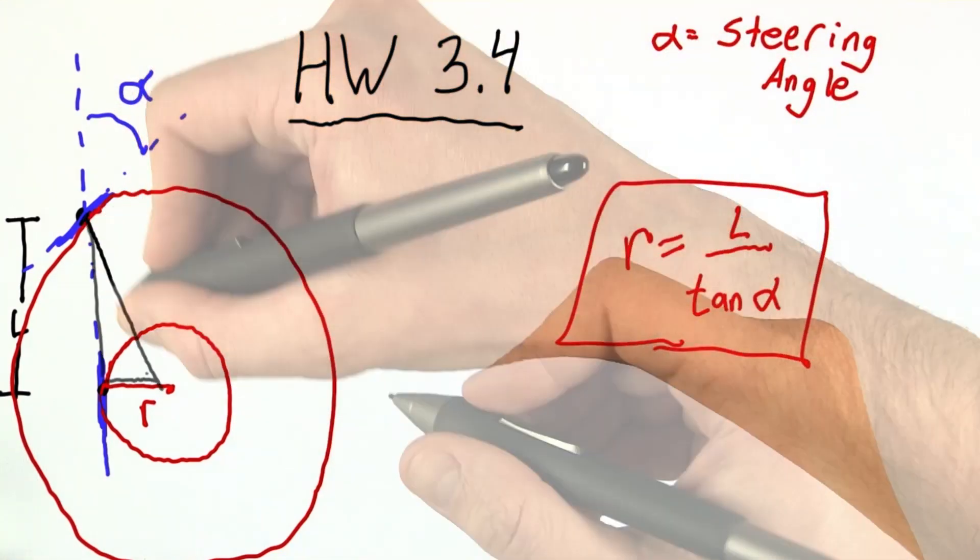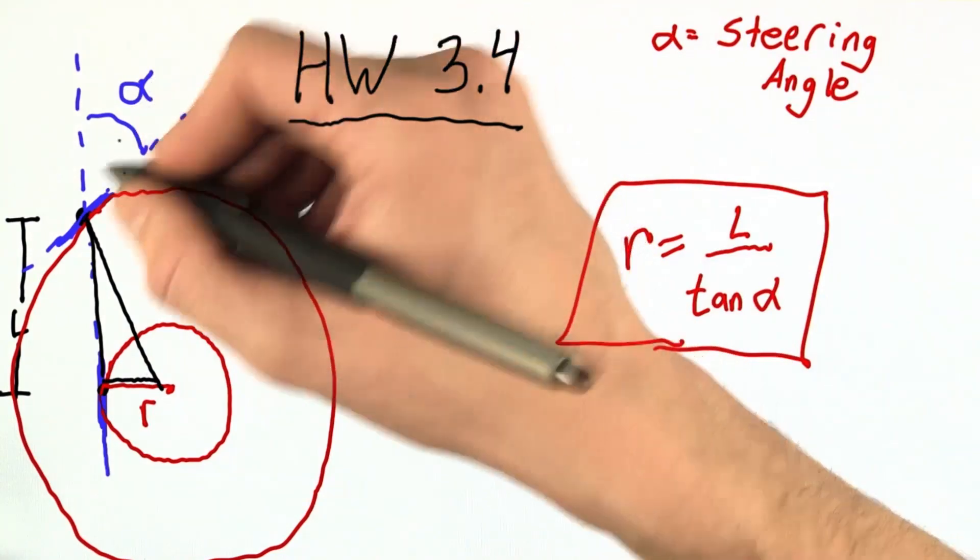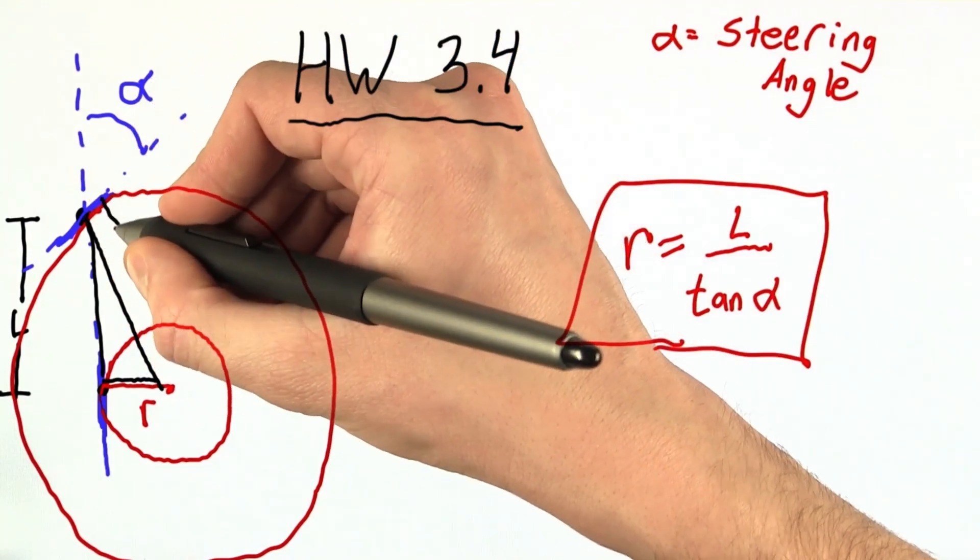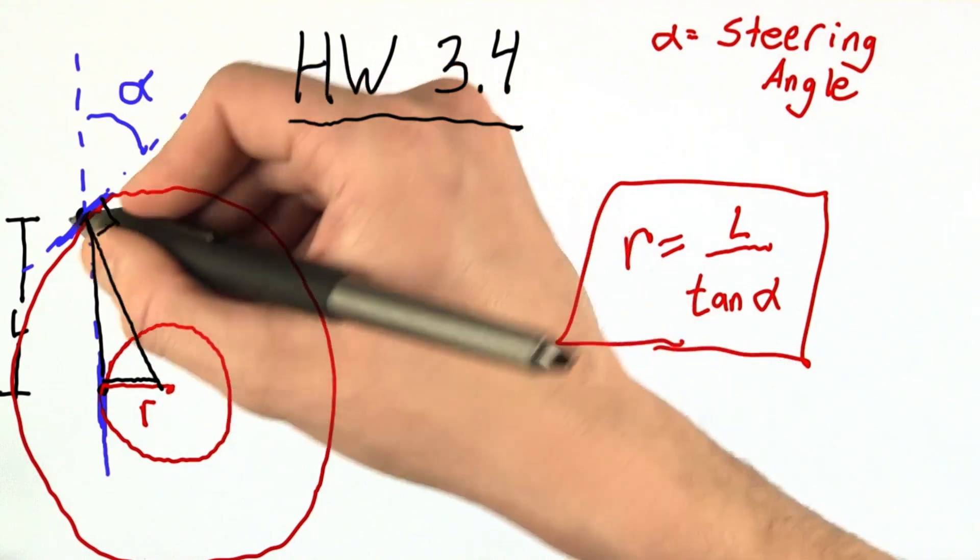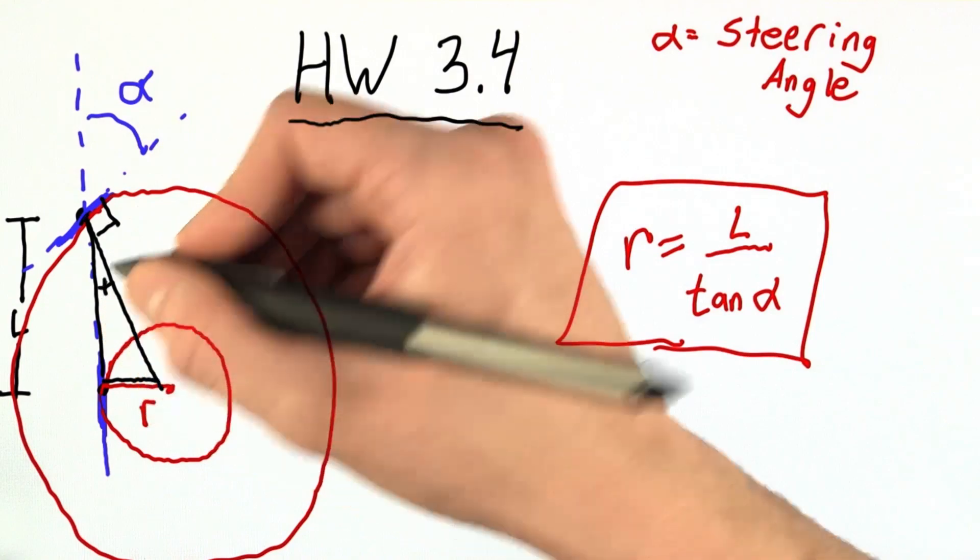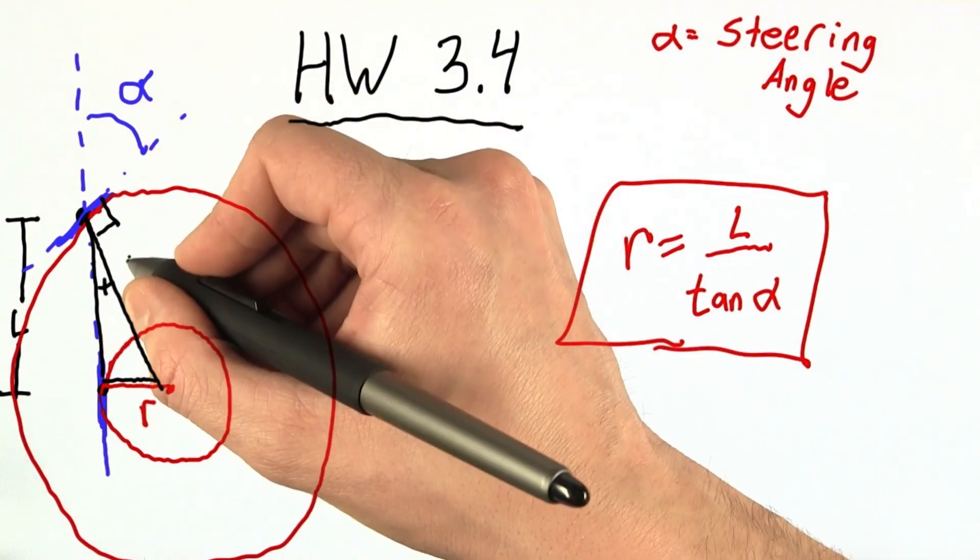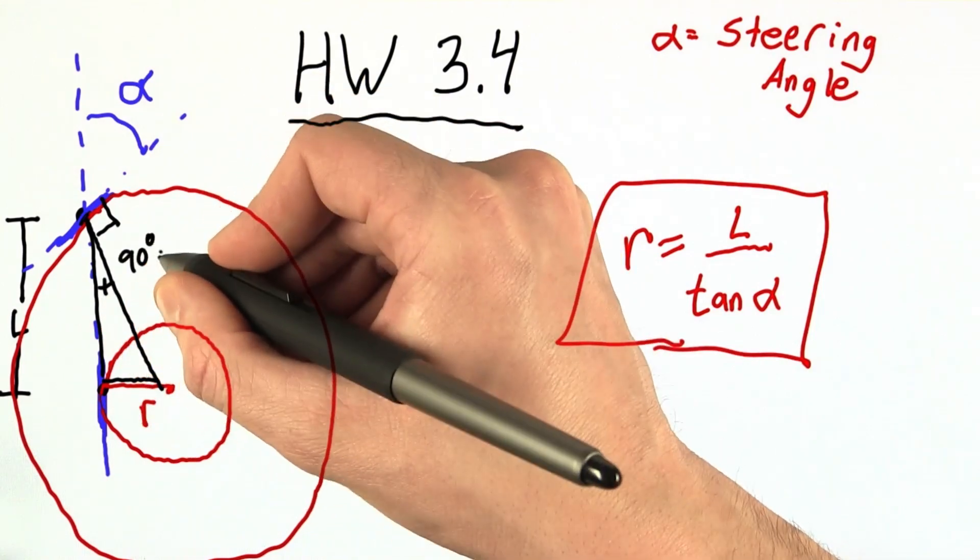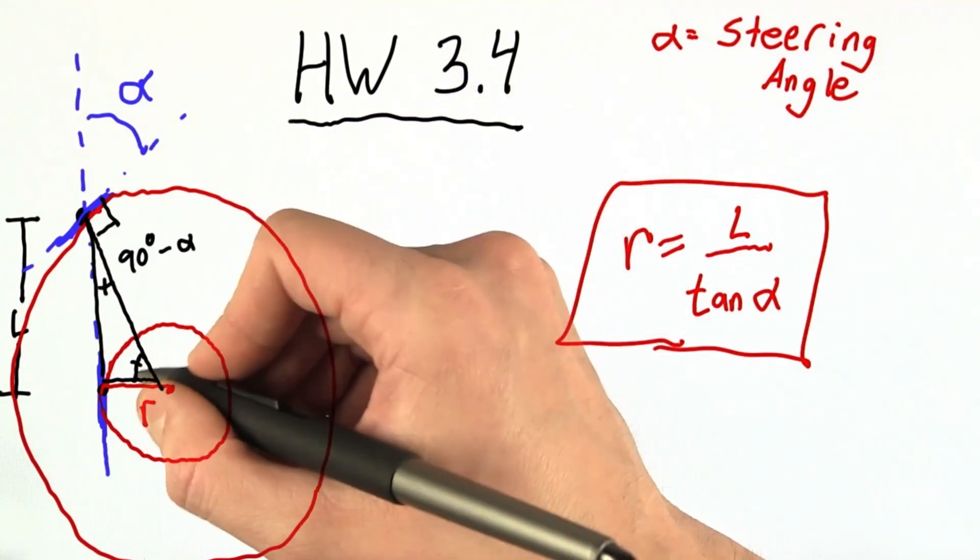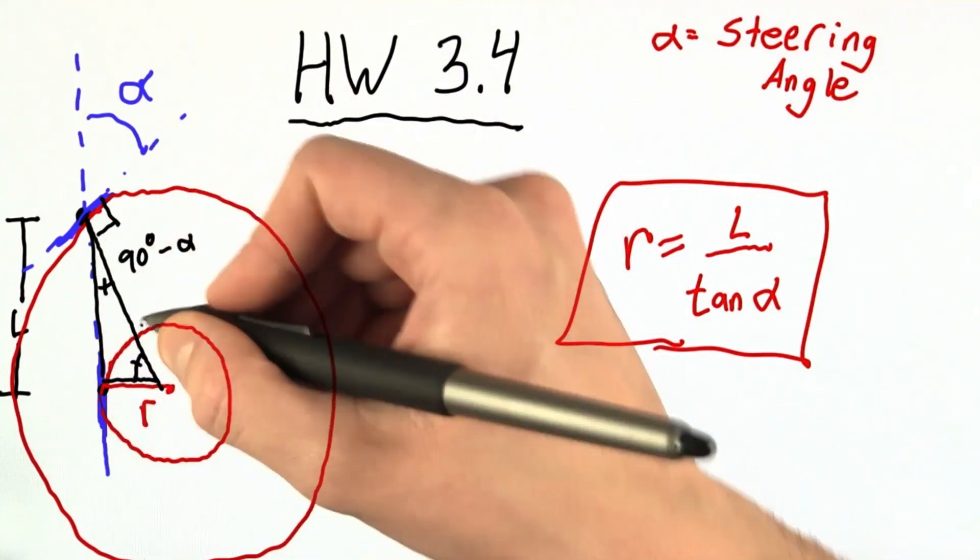Let's make a right triangle. Well, if this angle here is alpha, and this must be a 90 degree angle, because a radius intersecting with a tangent line always forms a right angle, that means that this angle here must be equal to 90 degrees minus alpha. Which means this angle, since this is a right triangle, must be alpha.